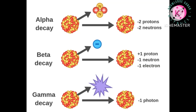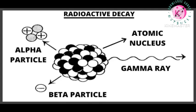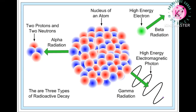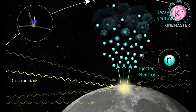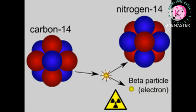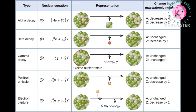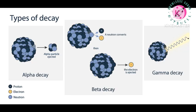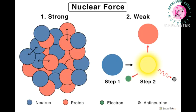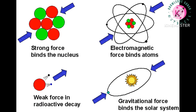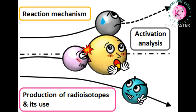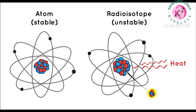Radioactive decay, also known as nuclear decay, radioactivity, radioactive disintegration, or nuclear disintegration, is the process by which an unstable atomic nucleus loses energy by radiation. A material containing unstable nuclei is considered radioactive. Three of the most common types of decay are alpha, beta, and gamma decay. The weak force is the mechanism responsible for beta decay, while the other two are governed by electromagnetism and nuclear force. The radioactive elements at the heart of radioactive dating are certain elements with unstable nuclei, known as isotopes.